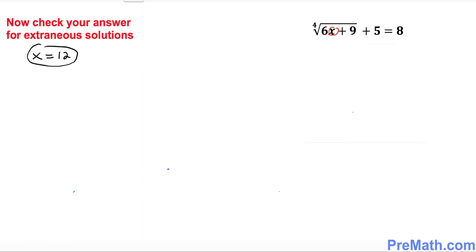This equation, this fourth root radical, is going to become 6 times 12 plus 9, and then plus 5. My question is: is this left hand side equal to 8?